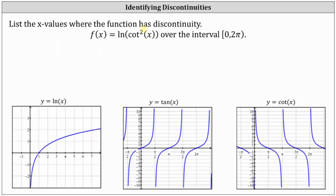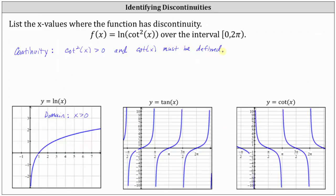Before we determine the x values where the function has discontinuity, let's list the conditions for continuity. If we take a look at the graph of the basic natural log function, notice how the domain or set of all possible inputs would be x greater than 0. So going back to our function f of x, this indicates that cotangent squared x must be greater than 0 in order to have continuity, but also cotangent x must be defined. If cotangent x is not defined, then of course f of x equals natural log of cotangent squared x is not defined.